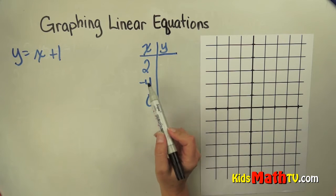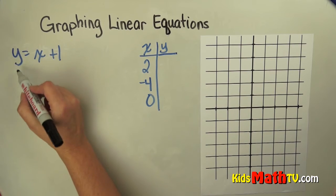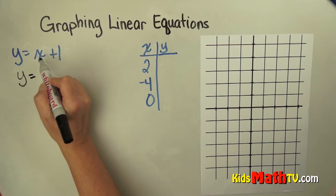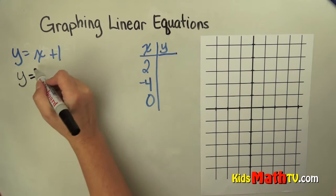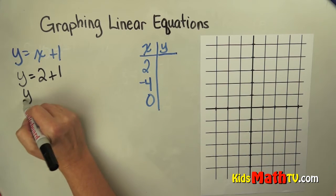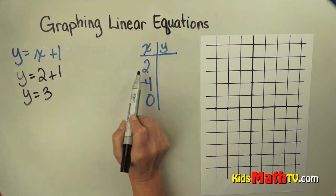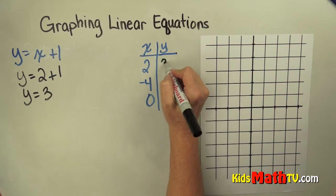So now what I'll do is I will substitute this x value into this equation. So y equals x, which is now 2, plus 1. And when I solve that, y equals 3. So with this equation, if x is 2, y is 3.